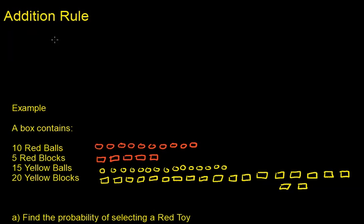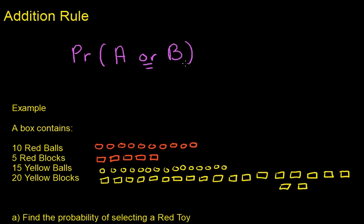In this video, we're going to discuss the addition rule, which is used for calculating probabilities of one event or another event — so 'or' is the key word. So the probability of A or B, you go to the addition rule. We'll define what the probability of A or B is mathematically in a few minutes, but first let's go through this example.